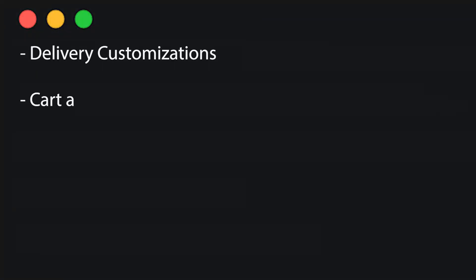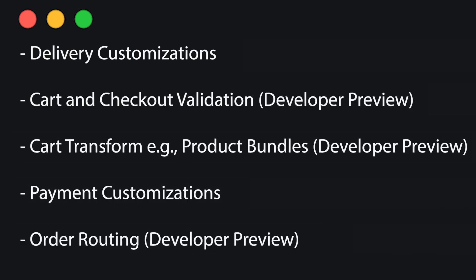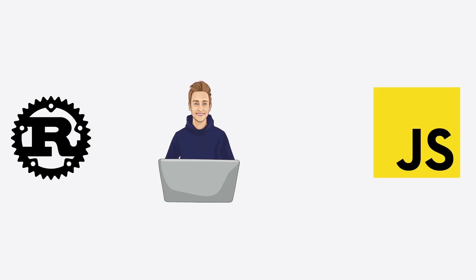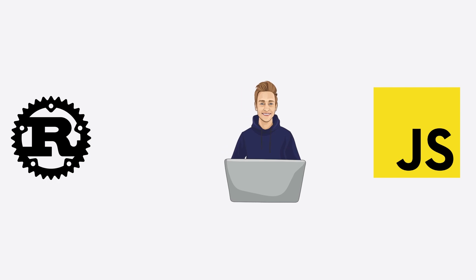What has changed since the last update? First, new areas will open up, including delivery customizations, cart and checkout validation, product bundles, payment customizations, and order routing. But the best news of all: functions can now also be written in JavaScript. That's awesome if you're just too lazy to learn Rust. If you want to learn more about that, let us know in the comments and check out the resources in the description.